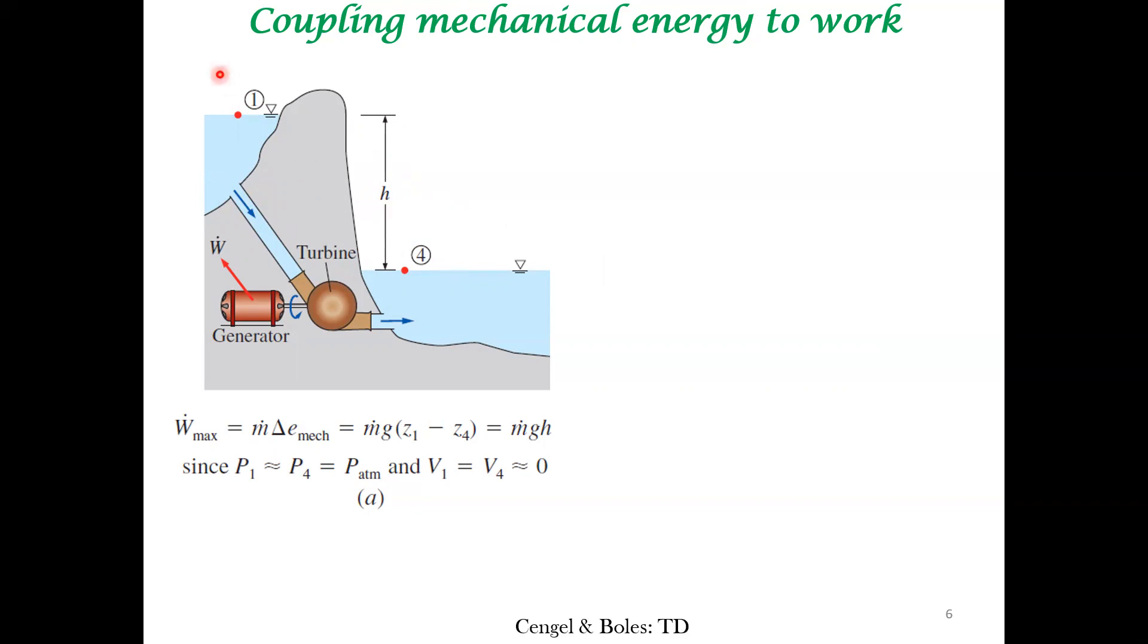The pressure at P₁ and P₂ is just atmospheric pressure, so the difference is marginal and can be neglected. Velocities can also be neglected. The only term that survives is change of potential energy, giving rise to work that can be generated using an ideal turbine and given to a generator. That's one way of implementing the equations from the previous slide.